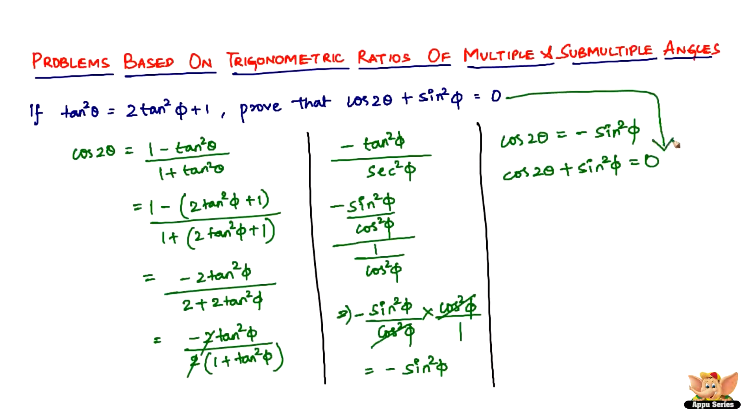So therefore we proved the same thing. We proved that if tan²θ = 2tan²φ + 1, cos2θ + sin²φ is definitely zero.